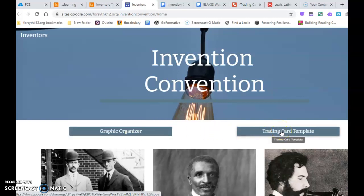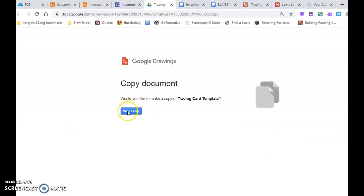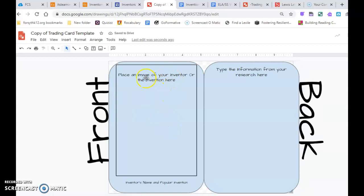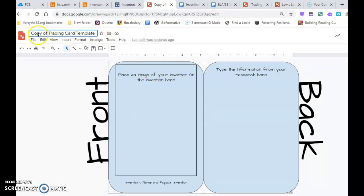And then there'll be something called a trading card template. When you get this, it'll make a copy. Each day, you'll have to create a new one and go get a new one. And then here, save it with your first name or last name and the actual person. So the Wright brothers are the first inventors. So you could say Kyle Polano, the Wright brothers. And what you're going to do is create the image here and your research here.